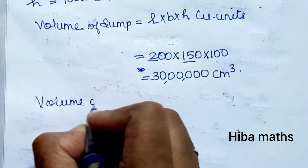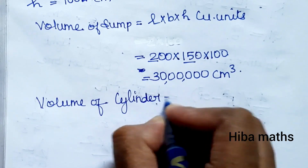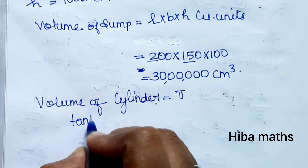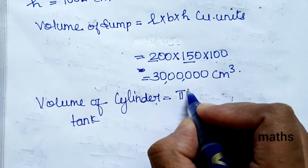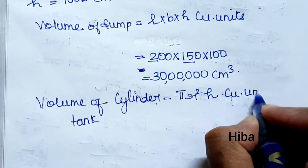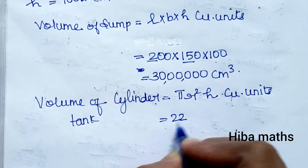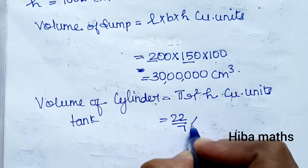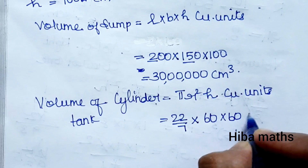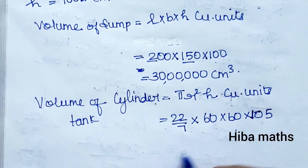Next, the volume of the cylinder formula is π r² h (cubic units). π = 22/7, r = 60cm, so r² = 60 × 60, and h = 105cm.